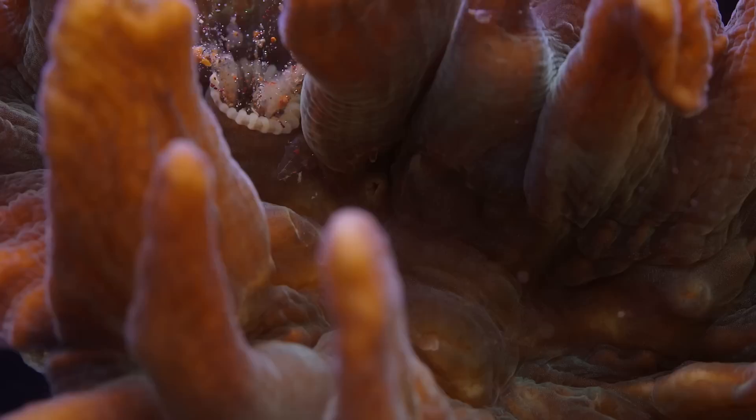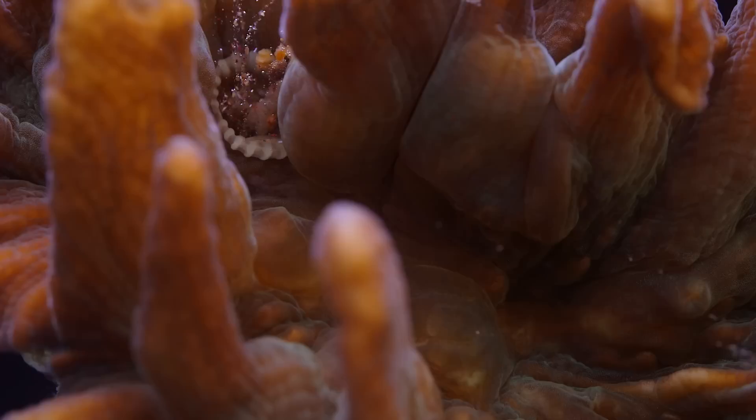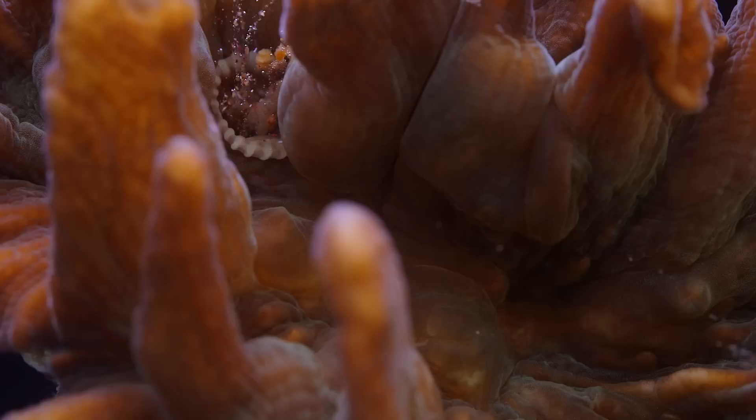Pectinia mainly use their mucus to entrap food particles and slowly draw it into their mouth. I am always surprised to see just how much food a coral can eat, especially in these species that do so at such a slow pace that it is hard to otherwise observe.